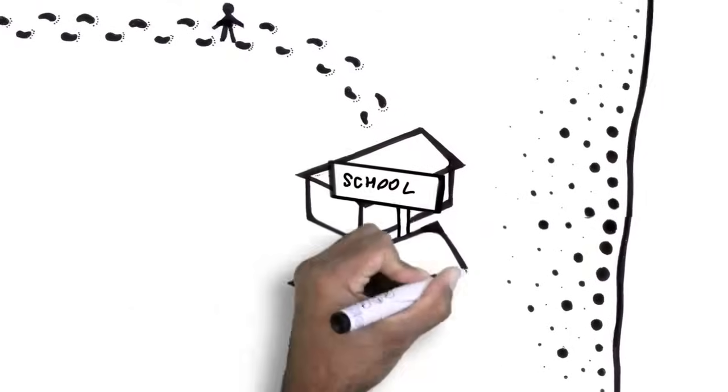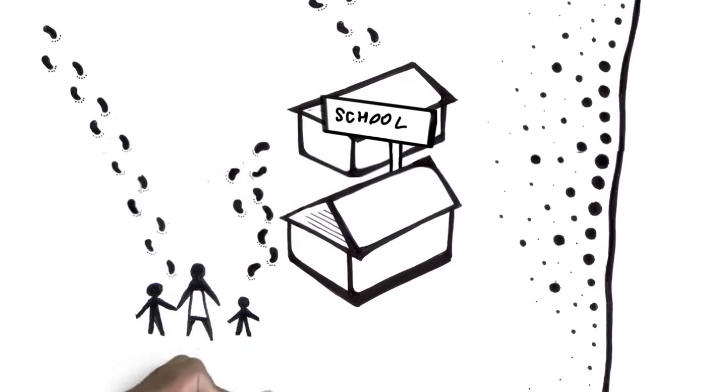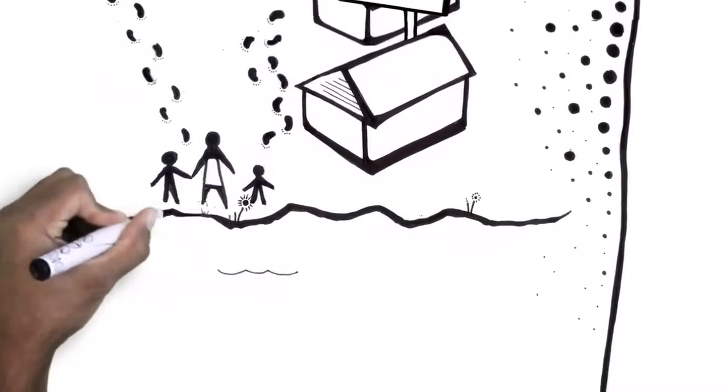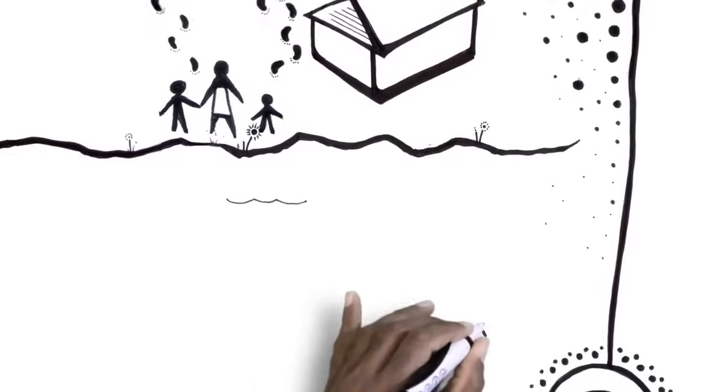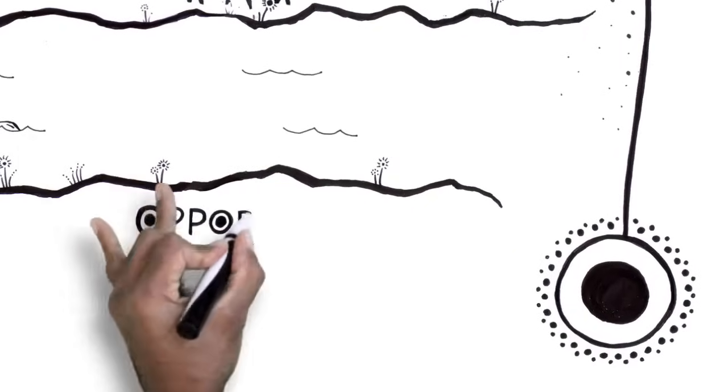And where you learn to swim this river is at places they call schools. These schools are set up to teach you how to read and write and other important skills so you can swim the river. And the reason that we must learn to swim the river is because all the opportunities in this new world are on the other side of the river.